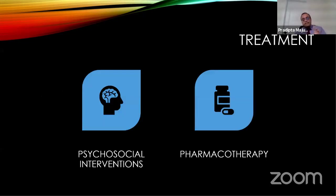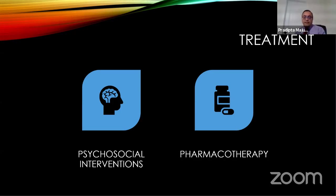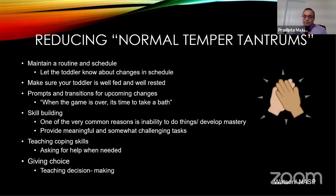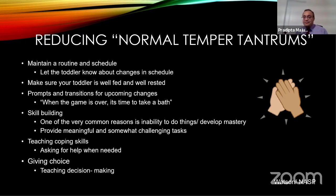Once the assessment part is over, you think about treatment — that's the main thing parents will come to you for. As I said, I want to make this useful for everybody. All two-year-olds will have some temper tantrums. So how can you reduce those normal temper tantrums? One very important thing is to maintain a routine and schedule. Just place yourself in a situation where you show up for work and your boss says you're doing something entirely different today — how does that make you feel? The same thing happens to a child. Maintain a routine and schedule, and let them know in advance if there is any change.